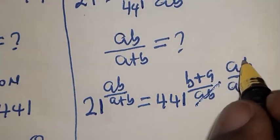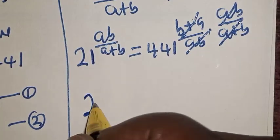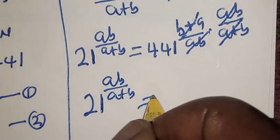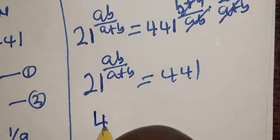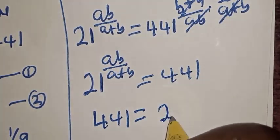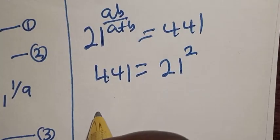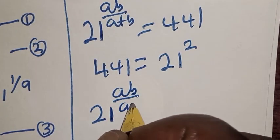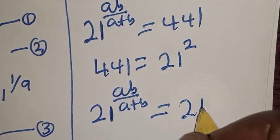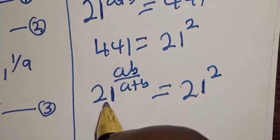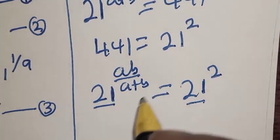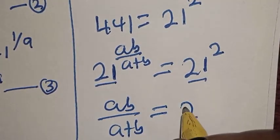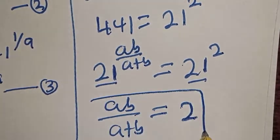Now, ab divided by ab will cancel, and a plus b divided by a plus b will cancel. We have 21 raised to power ab divided by a plus b is equal to 441. But 441 is equal to 21 squared. So we have 21 raised to power ab divided by a plus b is equal to 21 squared. Since they have the same base — base 21 — we work with the exponents. Therefore, ab divided by a plus b is equal to 2. That is our final answer.